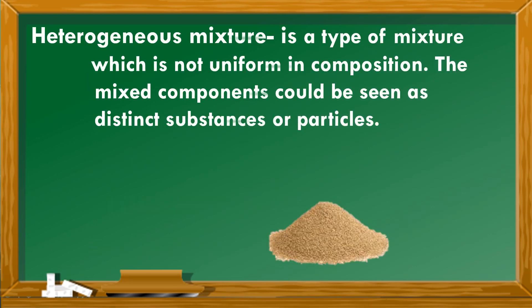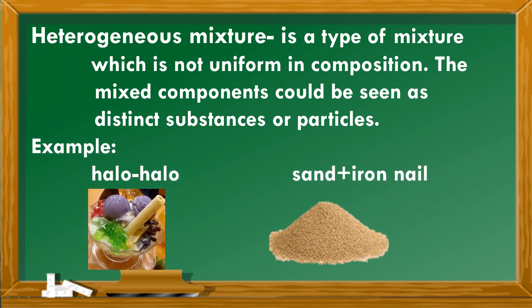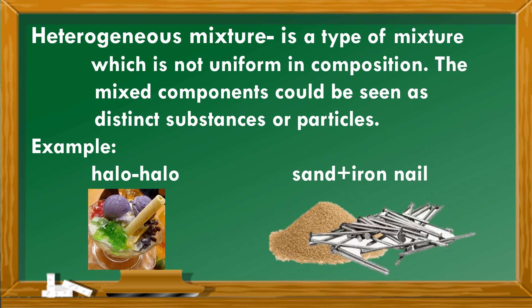How about a heterogeneous mixture? A heterogeneous mixture is a type of mixture which is not uniform in composition. The mixed components would be seen as distinct substances or particles. Examples are halo-halo, where you can see the different ingredients, and sand plus iron nails, where you can separate the sand from the iron nails.